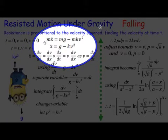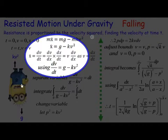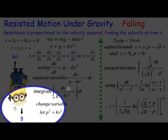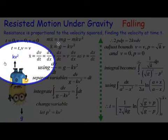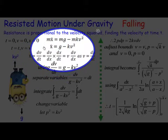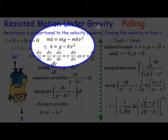The net force mx double dot, that's ma, is equal to—now if you look there which way is acting positively. Well, g obviously is going in the same direction so it's positive, and the kV squared is opposing the motion in the opposite direction. So when we set the equations up,